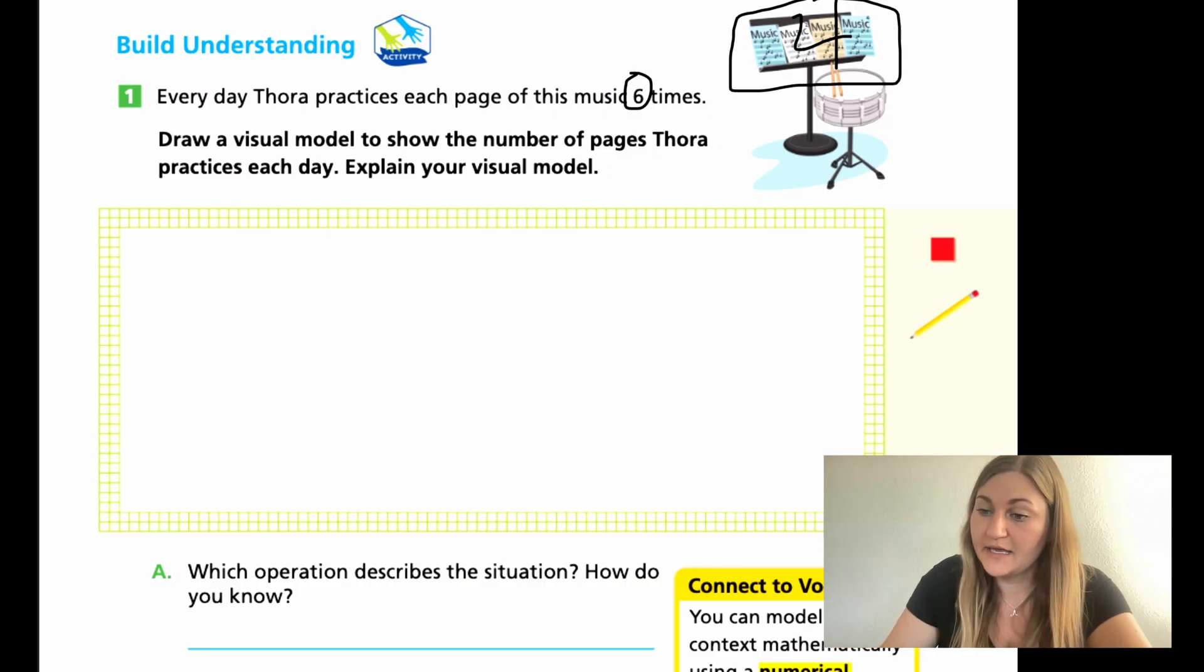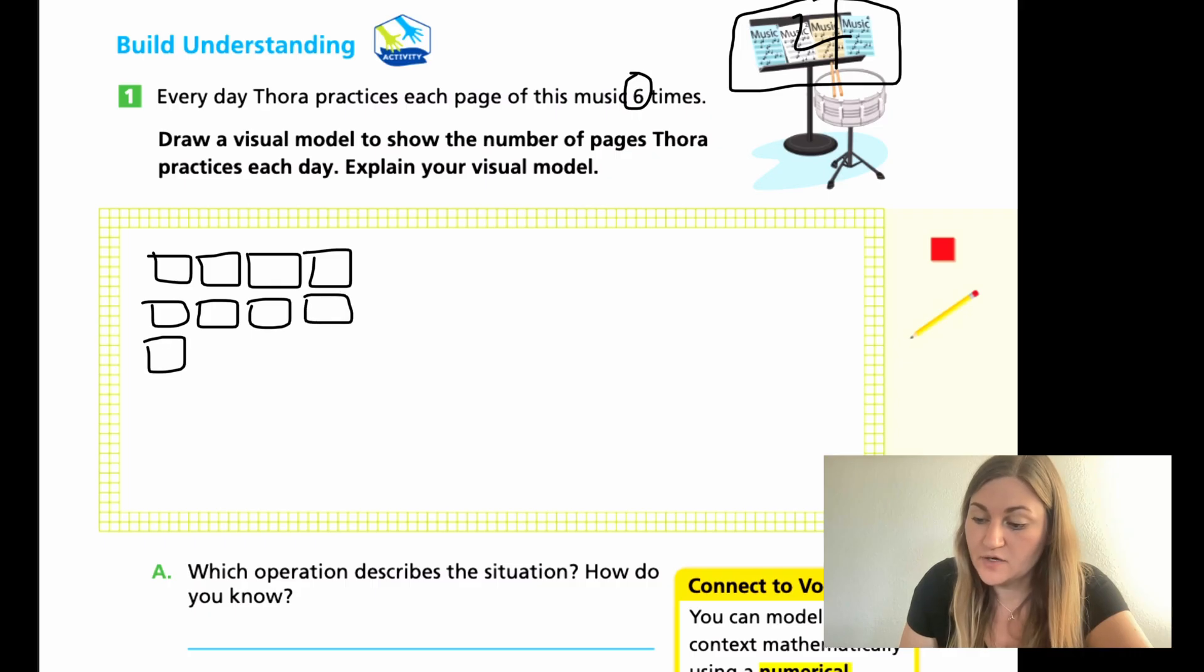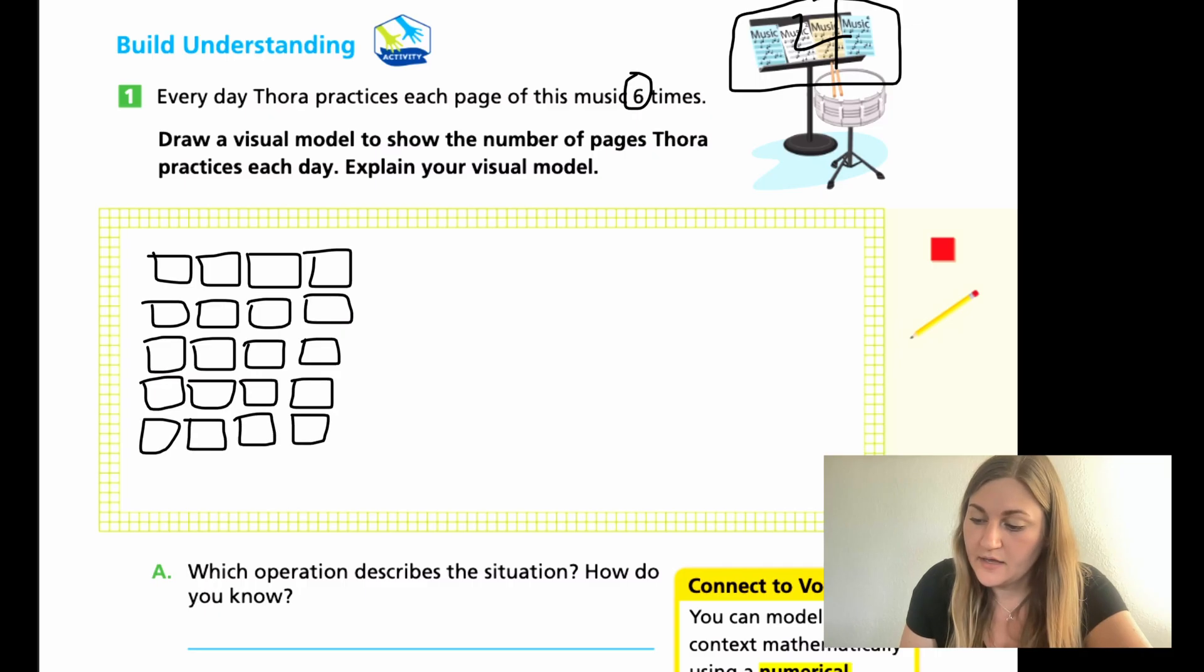Alright, so now we're going to draw that visual model. So, I'm just going to draw my 4 pages and have that be 1 time. And then the second time, she's going to do all 4 pages again. And so on as the 3rd time, the 4th time through, the 5th time through, and the 6th time through.